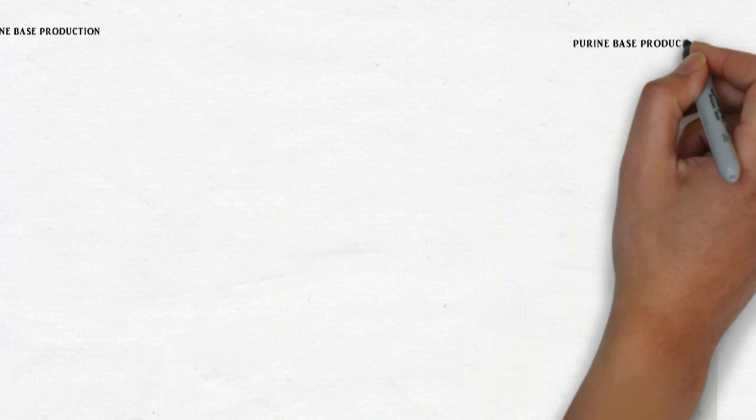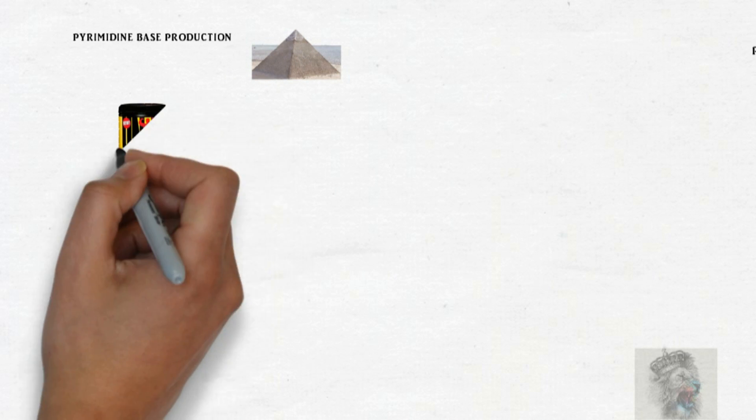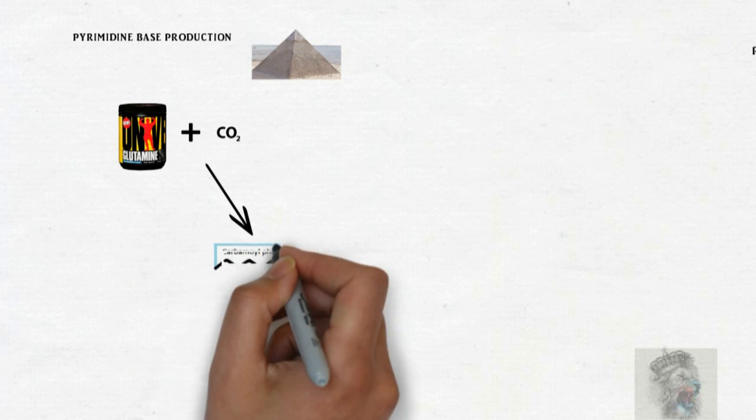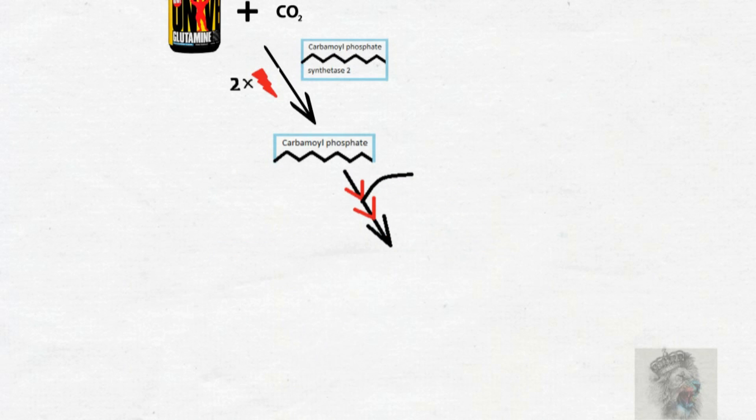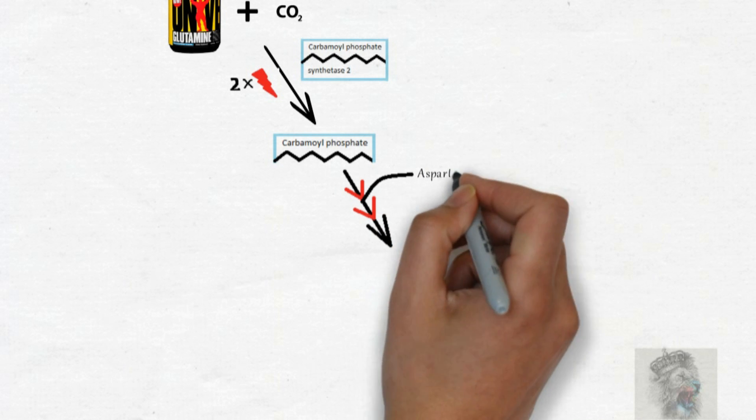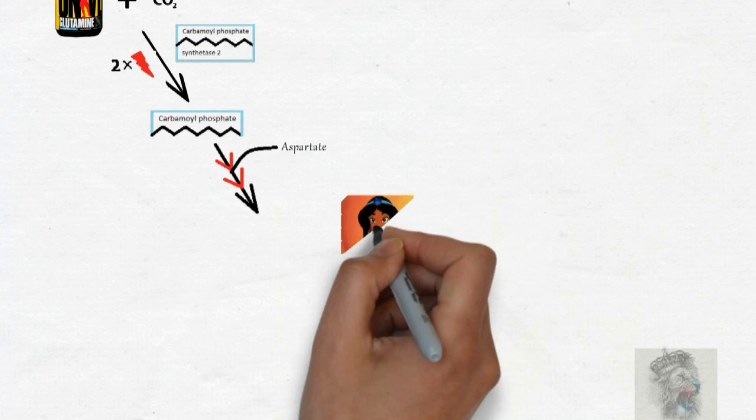In the time of the pyrimidine and purine base production nearby the pyramids, there lived Aladdin who used glutamine as a supplement with carbon dioxide to transform into V-shaped body carbamyl phosphate using two ATP and carbamyl phosphate synthase II. Once he converted into carbamyl phosphate, the V-shaped body, he went through three stairs up the pyramid...